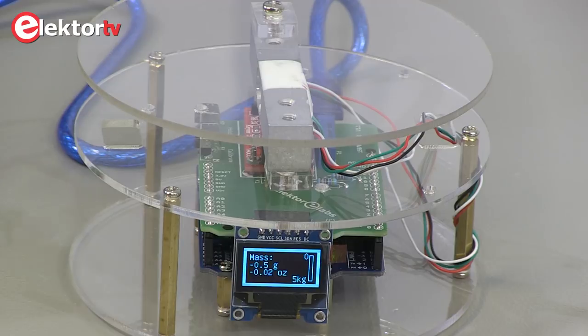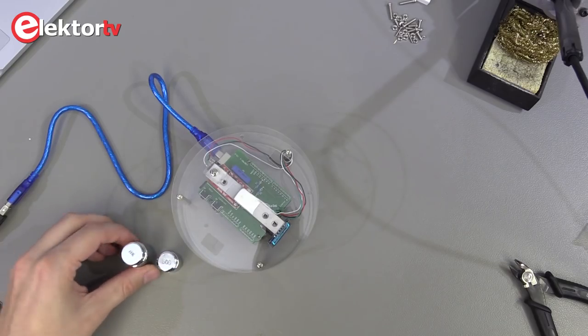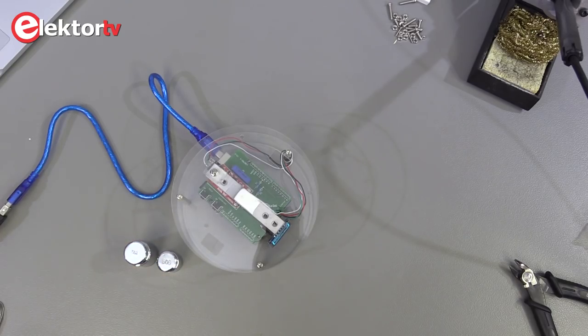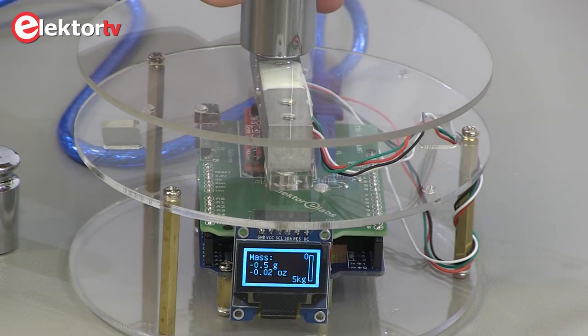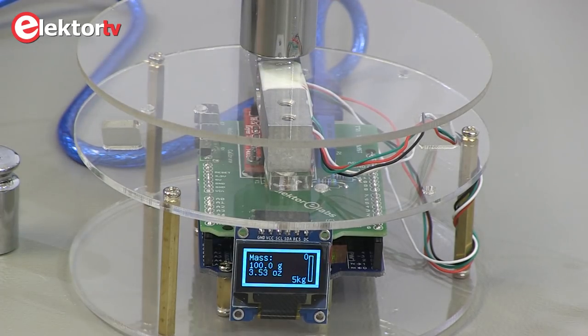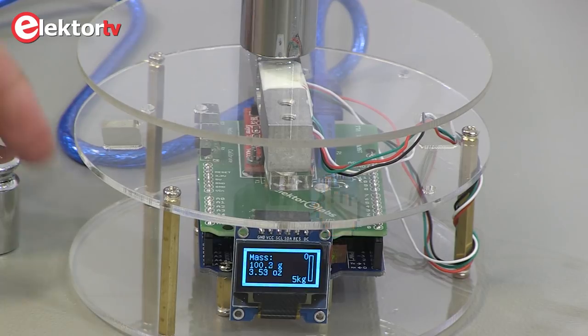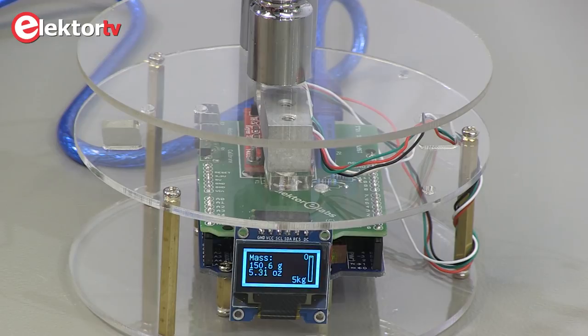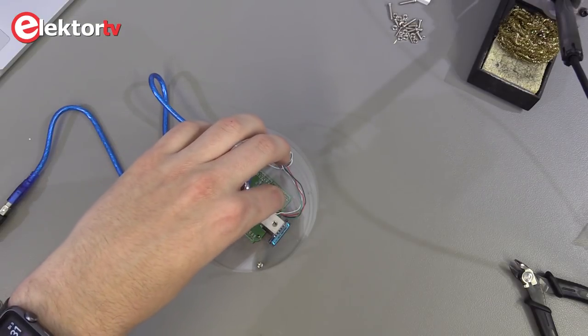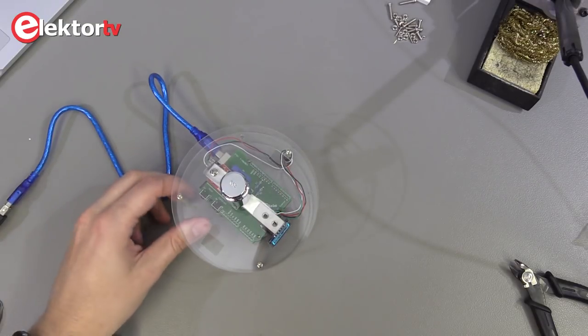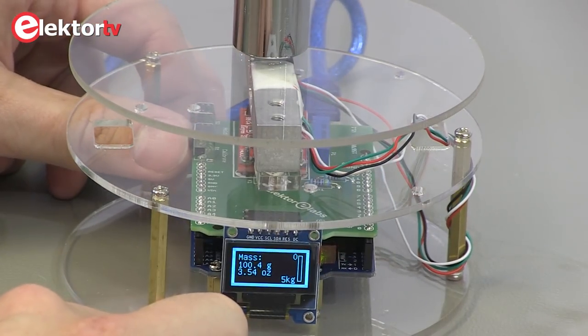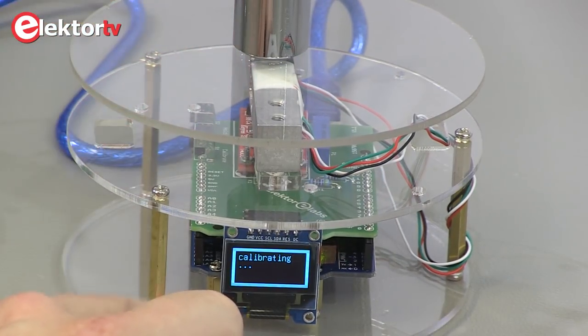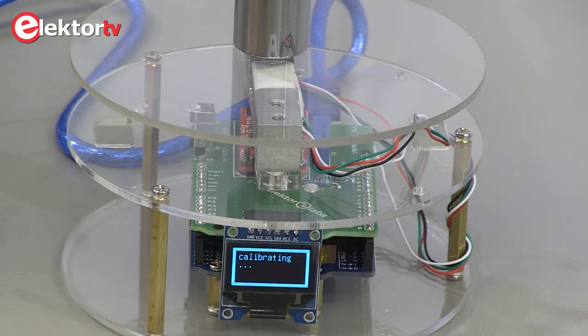Also included are two calibration weights. One is 50 grams and the other 100. Let's put the 100 gram weight onto the scale. As I mentioned earlier, the potentiometer can be used for fine tuning. I'll add the 50 gram weight. And when I calibrate now, add the 50 gram weight.